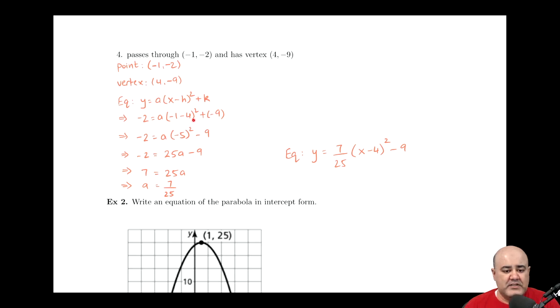And then negative 1 minus 4 yields negative 5. Everything else stays the same. Negative 5, the quantity squared, gives us 25. And then 25 times a just gives us 25a.